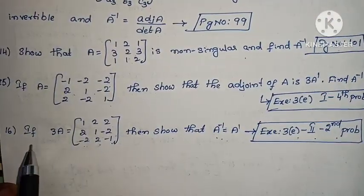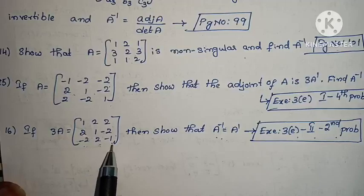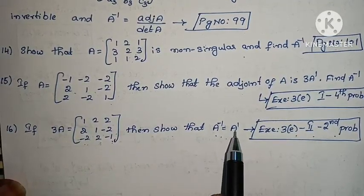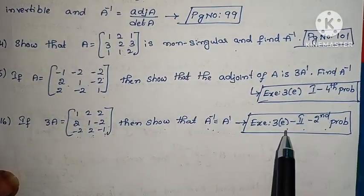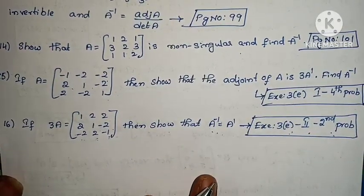Sixteenth question: if 3A equals to [1, 2, 2; 2, 1, -2; -2, 2, -1], then show that A⁻¹ = Aᵀ. This problem is in Exercise 3(e), second roman, second problem.